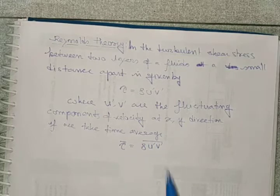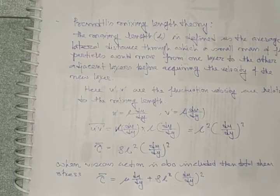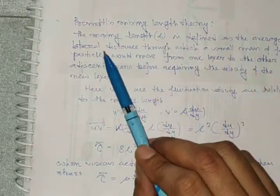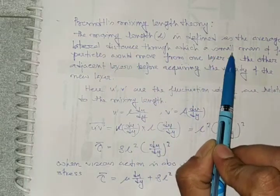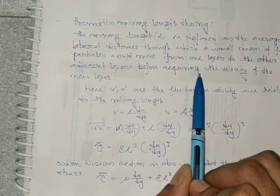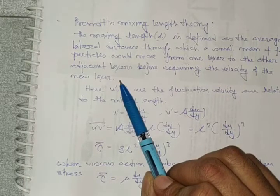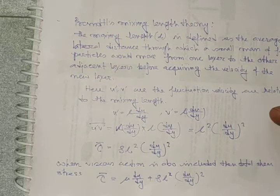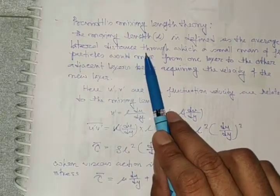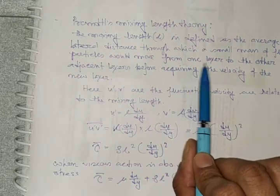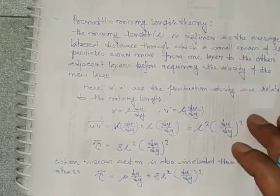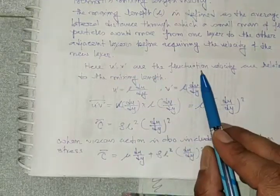Prandtl mixing length theory: the mixing length L (small l) is defined as the average lateral distance through which a small mass of fluid particle would move from one layer to another adjacent layer before acquiring the velocity of the new layer. In turbulent flow, mass from one layer tries to move to an adjacent layer, and L is the distance it travels before acquiring the new layer's velocity.